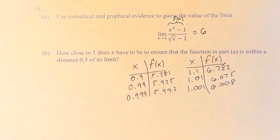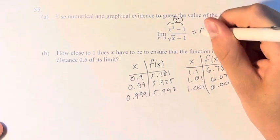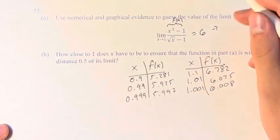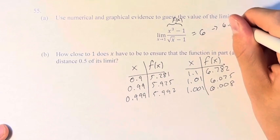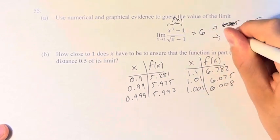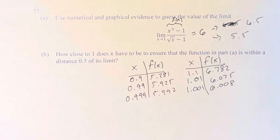So then in part b, we're asked how close does x have to be to 1 to ensure that the function in part a is within a distance of 0.5 from its limit. So if it's equal to 6, we're asking how close does x have to be to be between 6.5 and 5.5. At what point are those values contained within the x values?